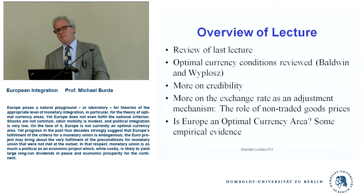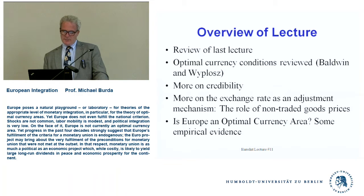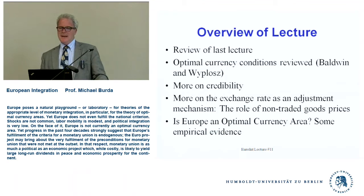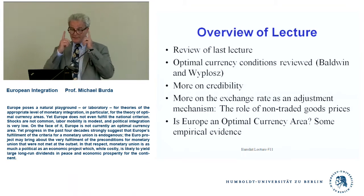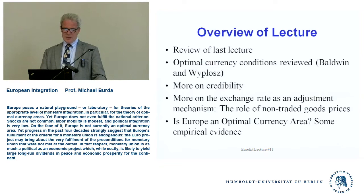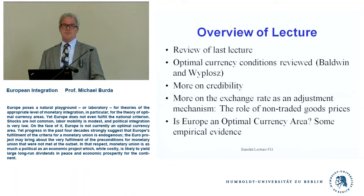If you were taking the master's course, we'd actually write down a mathematical model and solve it, because it's a nice optimization problem. But in a bachelor's course, it's good enough to do it diagrammatically to understand the principles. Then I'll talk about the exchange rate in detail as an adjustment mechanism. This goes along the lines of what McKinnon wrote in his famous work on monetary unions and common currency areas. He spoke about the role of non-traded goods, and I'd like to highlight that, because if you look at southern Europe, a lot of adjustment has had to occur through non-traded goods prices.